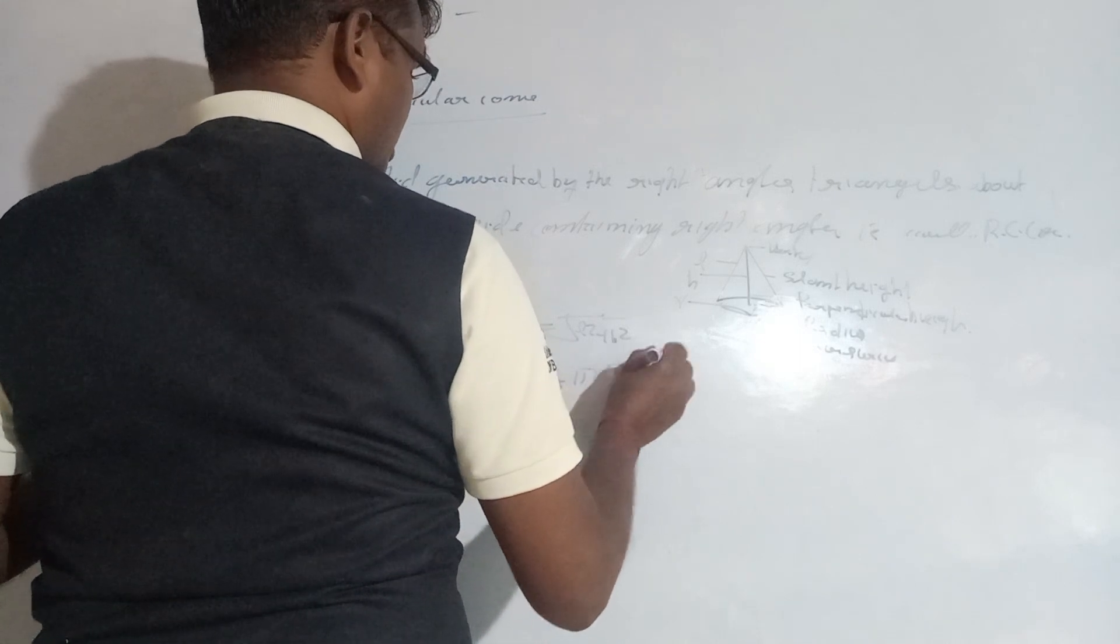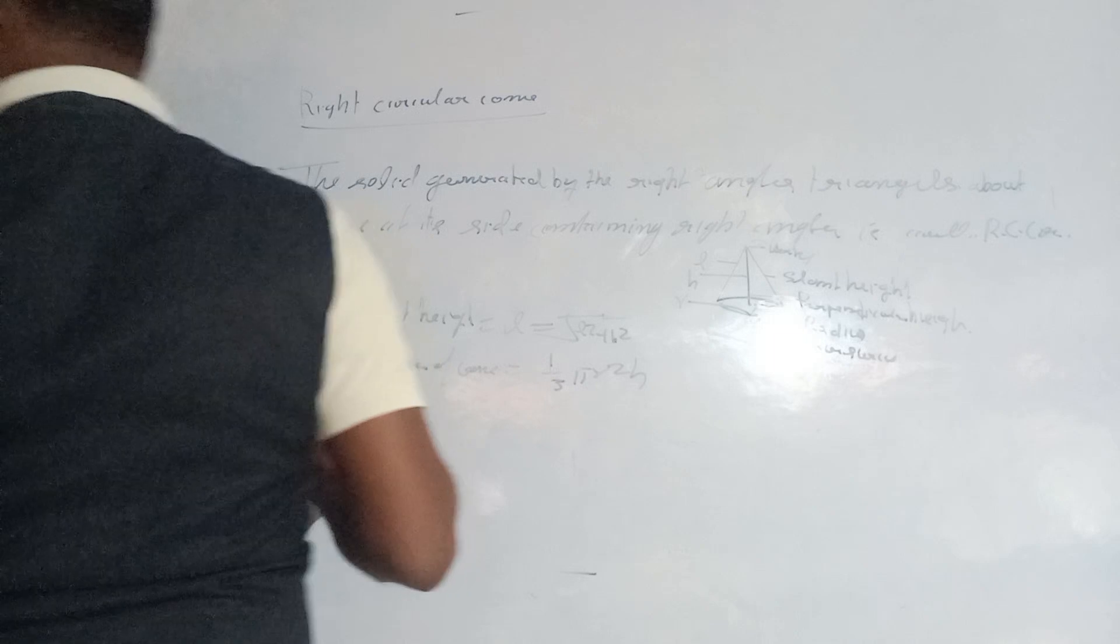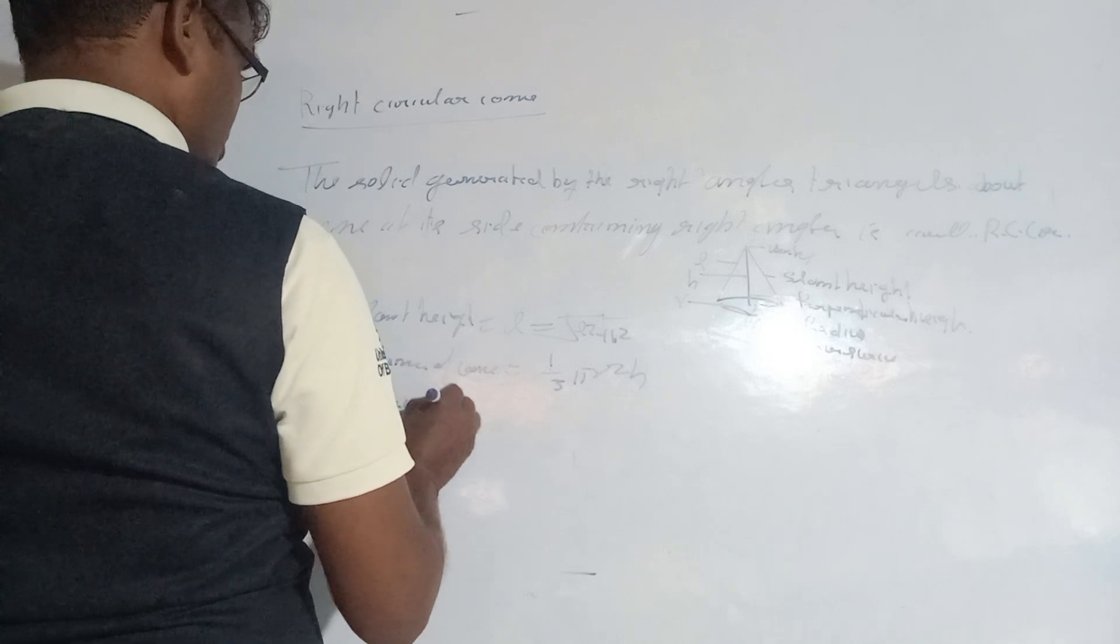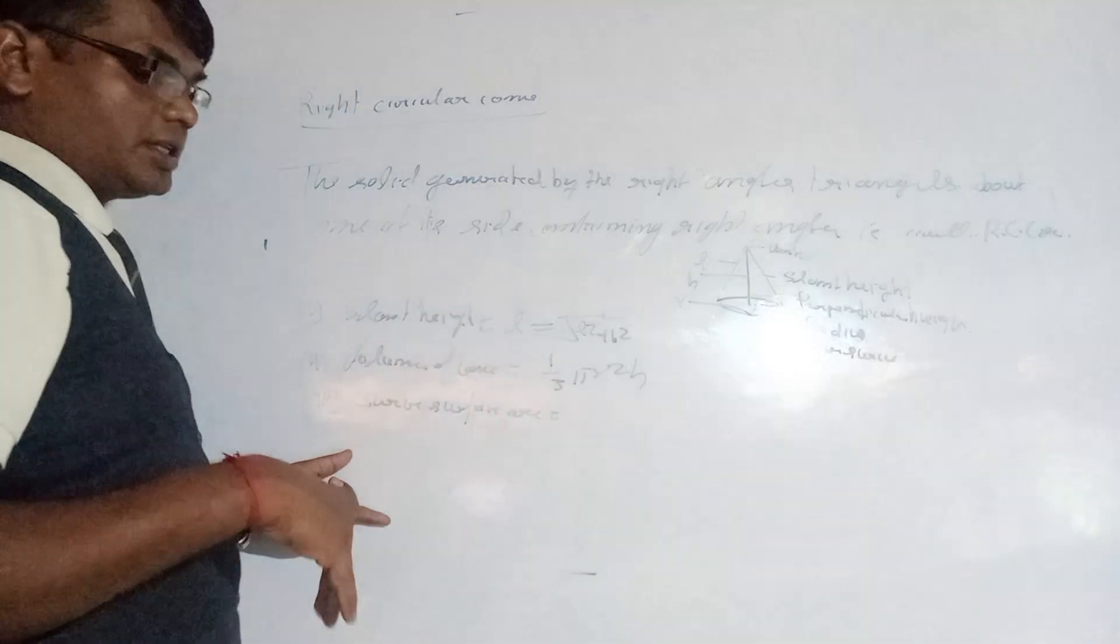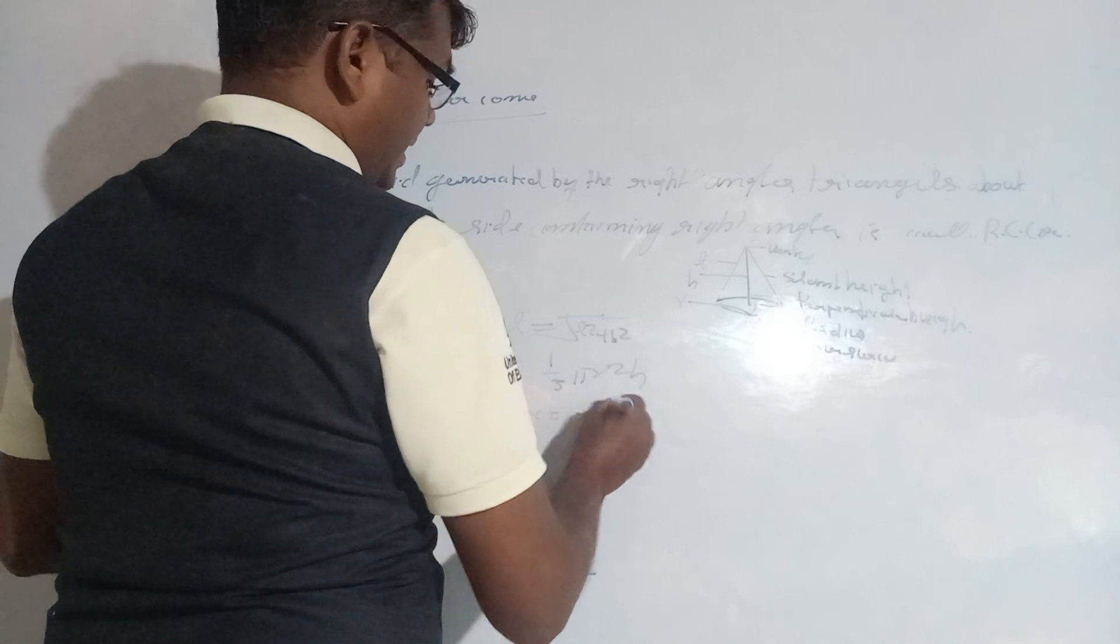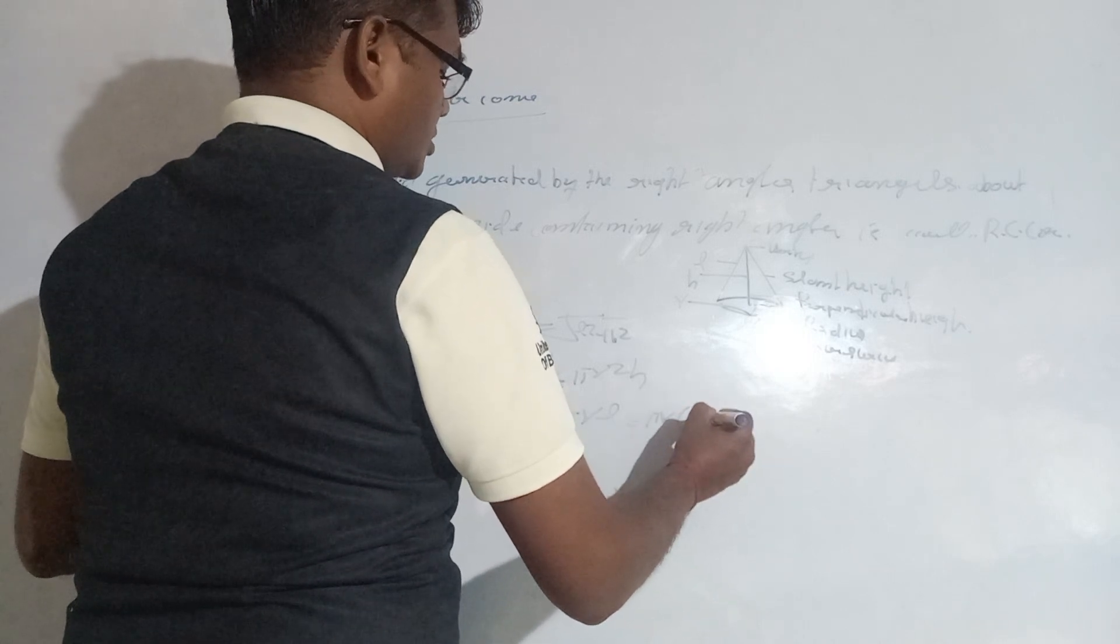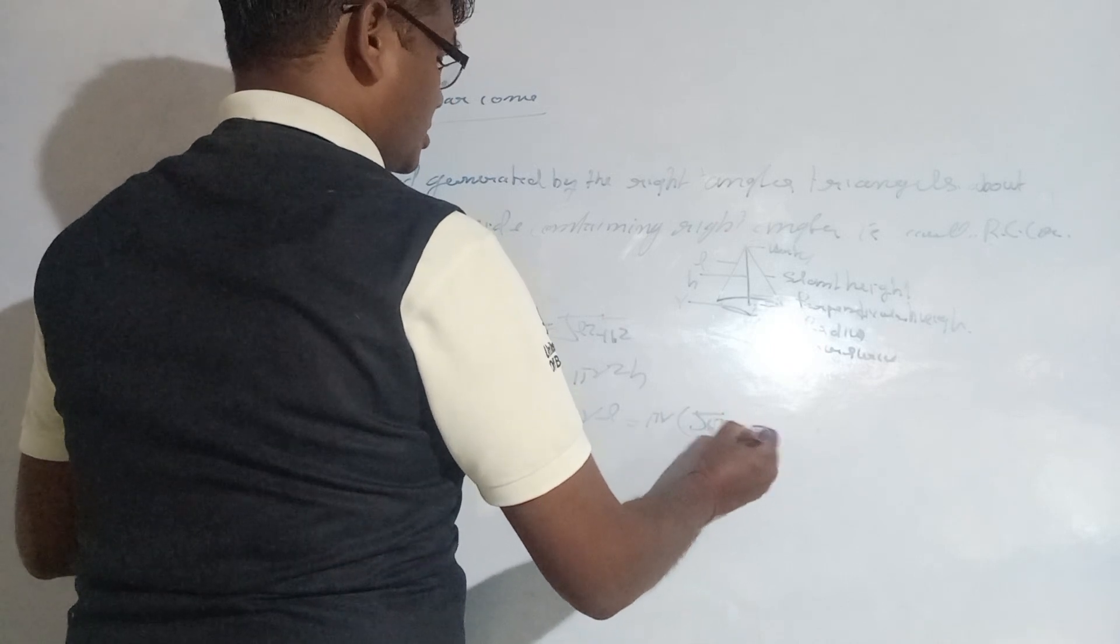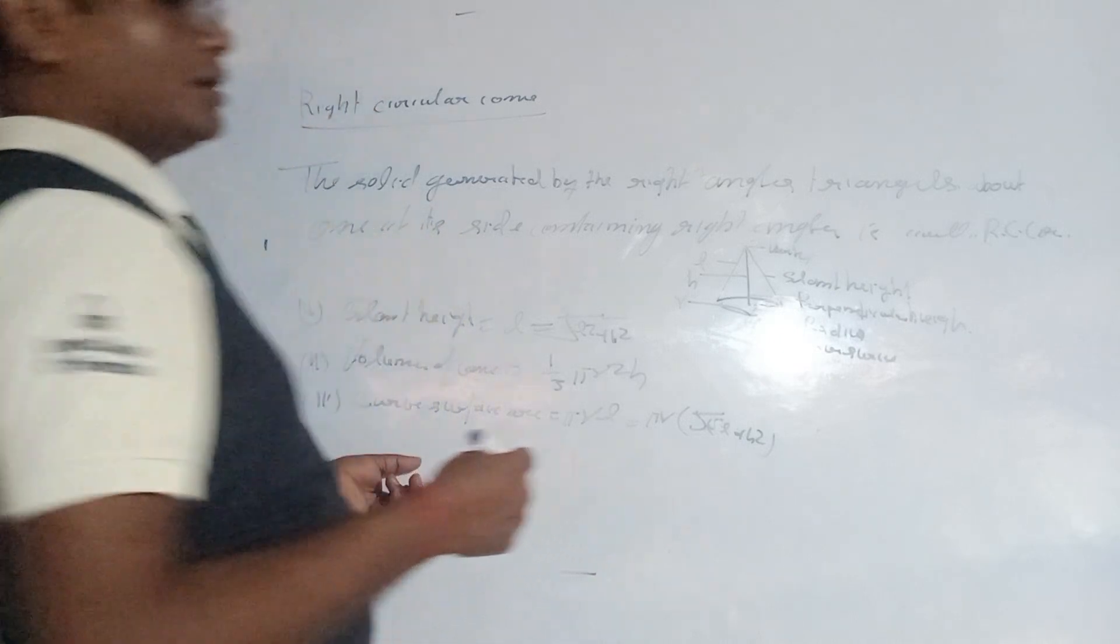Third, we can calculate the lateral surface area. The lateral surface area is πrL, which can also be written as πr times the square root of h² plus r².